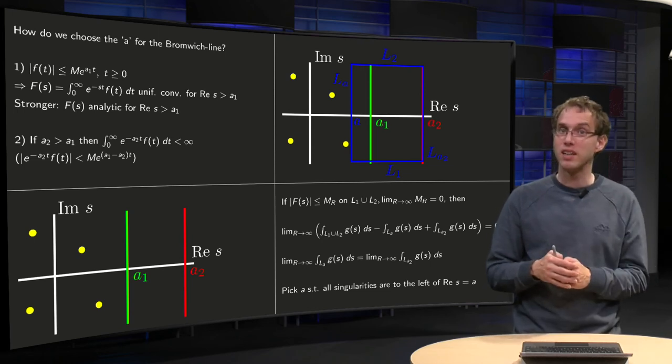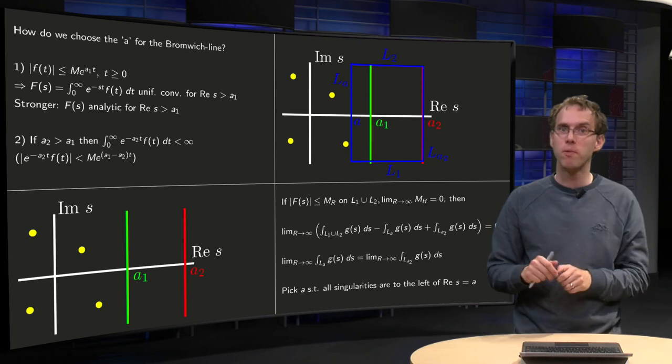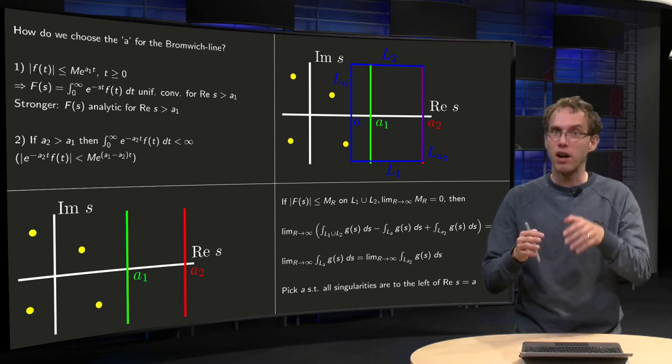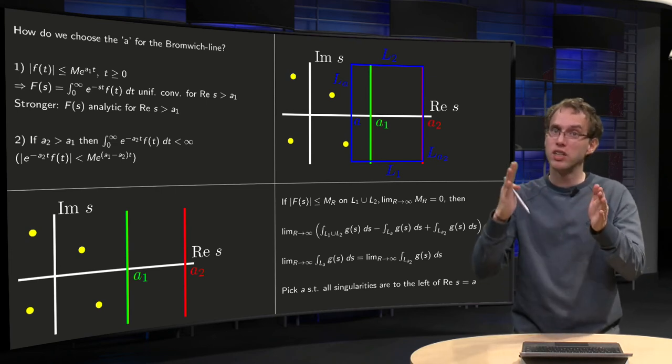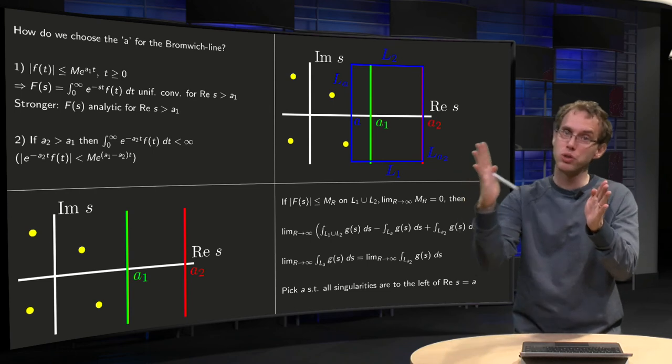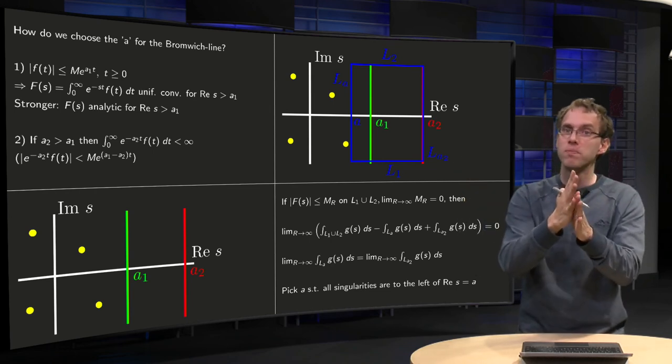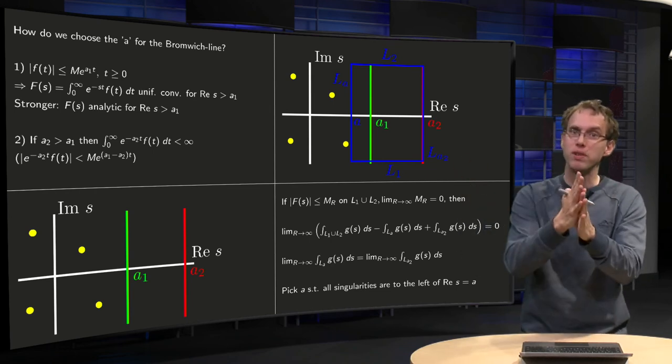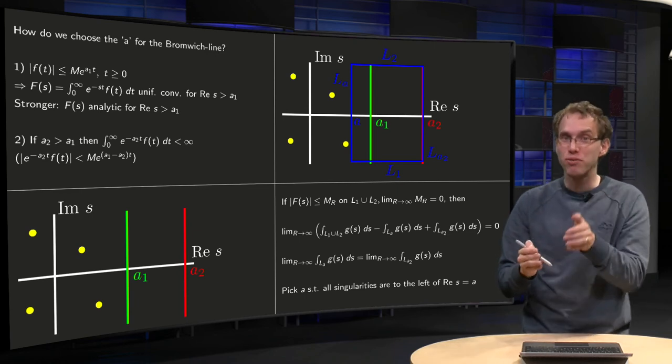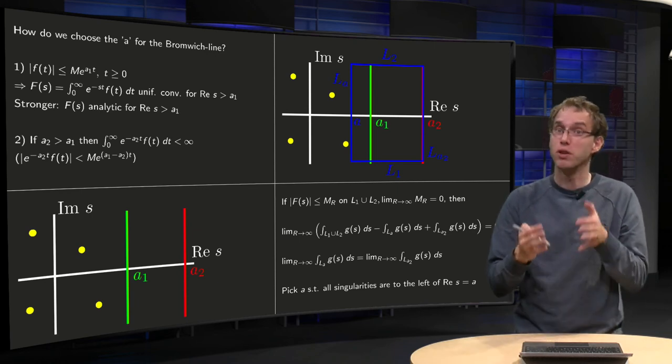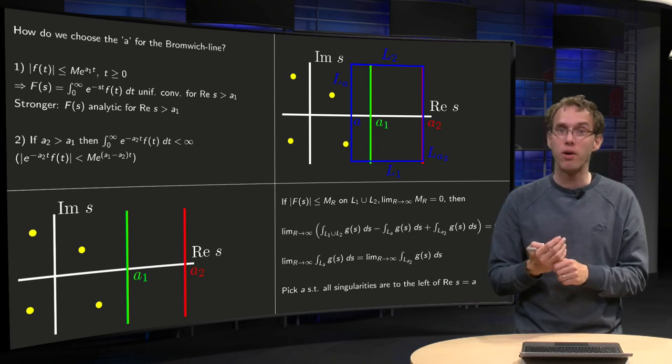So now we only have to get rid of the contributions along l₁ and l₂. And if we are able to do that, then we can shift our integral along a₂ to a. And if we are able to shift it to a, then we know that any line to the right of all singularities will do in order to compute our Bromwich integral.